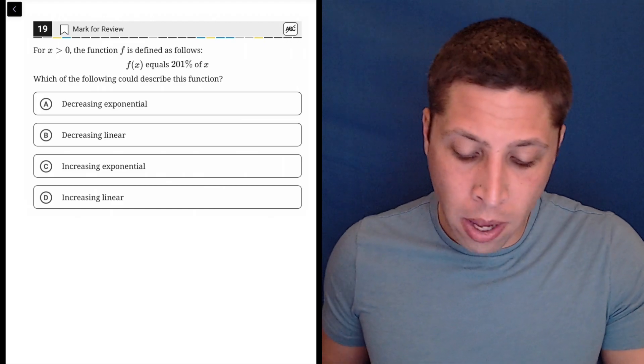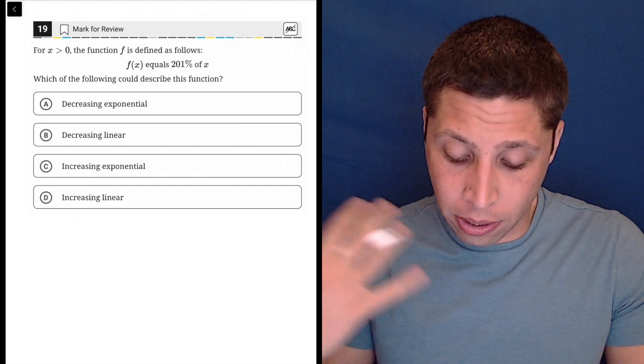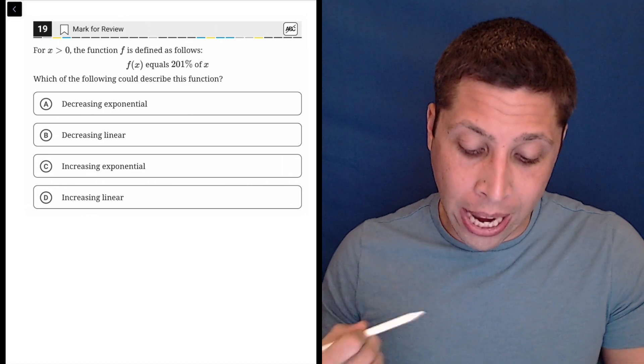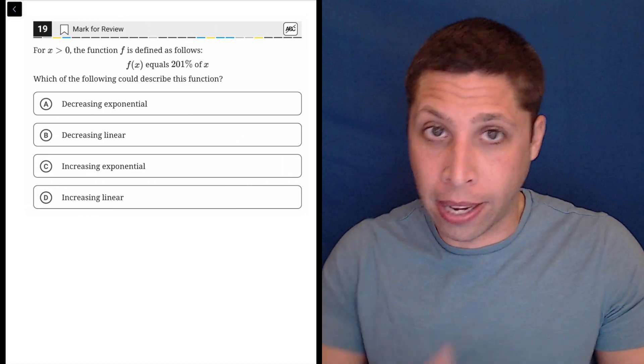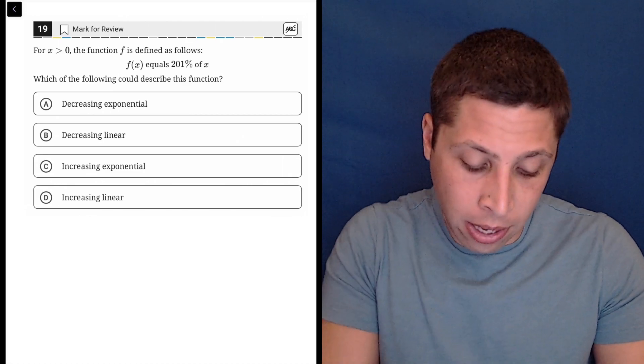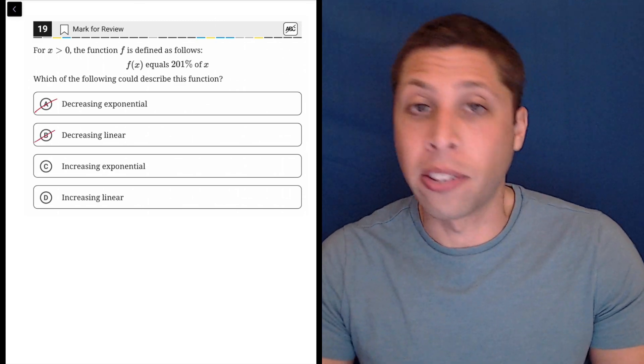All right, this question has a big trap here. So first of all, we should hopefully understand that if we have 201% of something, it's getting bigger, right? It's increasing. So that should probably get us down to C and D.